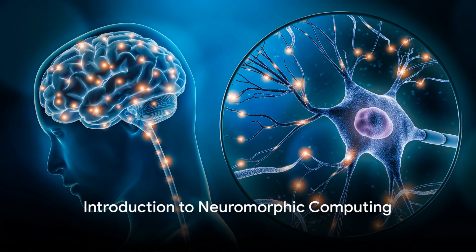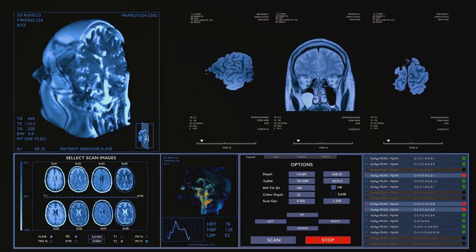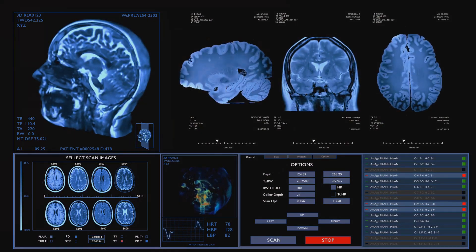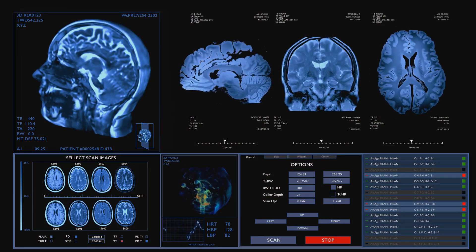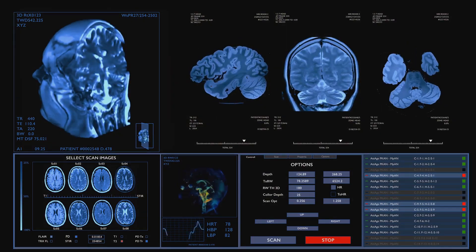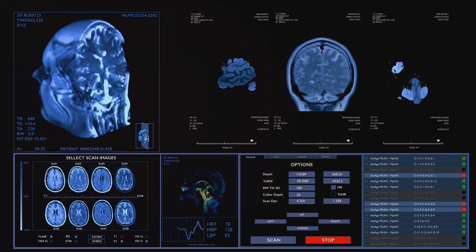What if the human brain, with its billions of neurons and trillions of connections, could be replicated in a machine? Imagine a computer that doesn't just calculate but learns, evolves and adapts just like the human brain. This isn't the realm of science fiction, it's the cutting-edge field of neuromorphic computing.